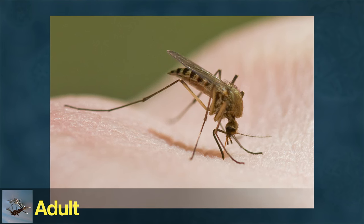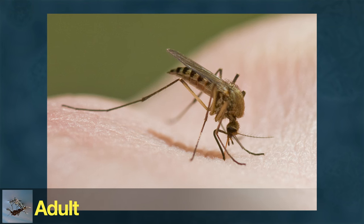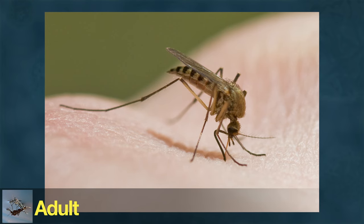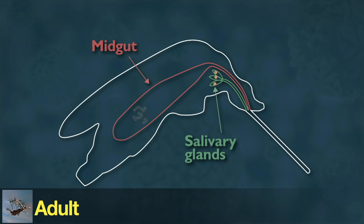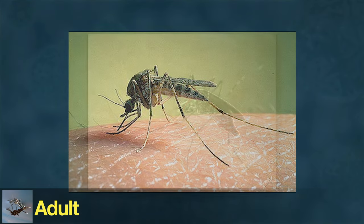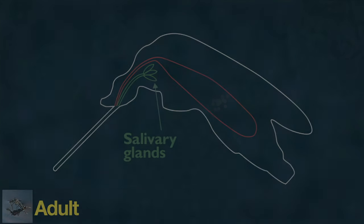It's at this stage that a female mosquito can transmit diseases. First, the female mosquito bites and drinks blood from an individual infected with a pathogen, such as a virus or a parasite. The pathogen travels with the blood to an organ in the mosquito called the midgut. After replicating in the midgut, the pathogen spreads to the mosquito's other organs, including its salivary glands. Whenever the mosquito bites another individual, it can then transmit the pathogen to that individual and infect them with the disease.